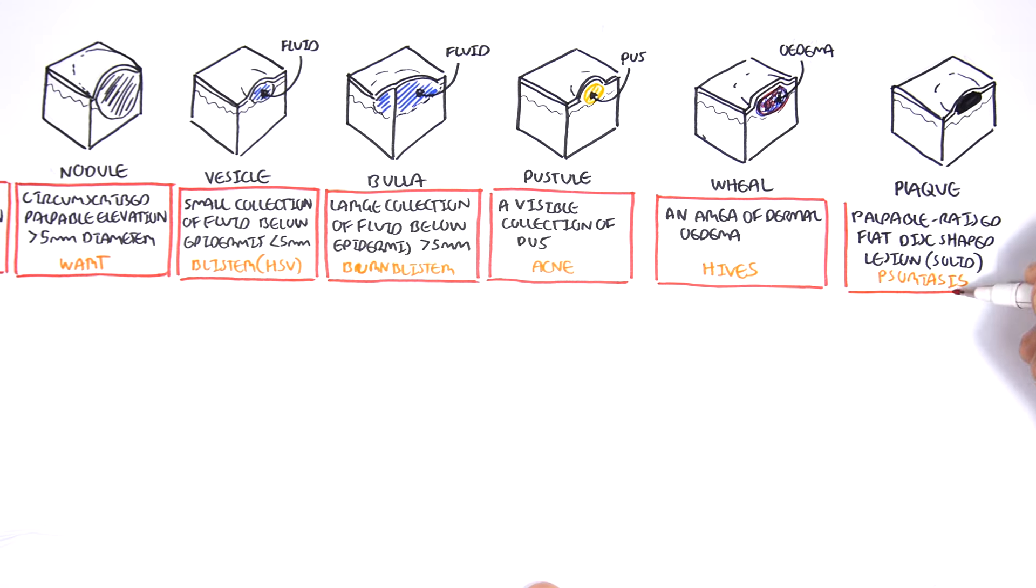Scales can also be used. Scales is defined as an accumulation of excess keratin. This can be seen in dandruff. Dandruff is an example of scales.